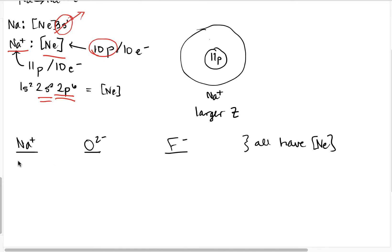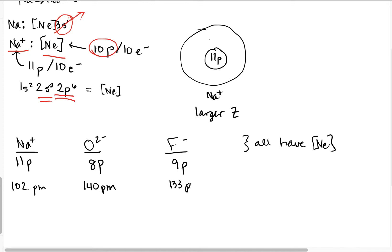All three of these ions have a neon noble gas electron configuration, so now we are comparing apples to apples. Sodium ion has 11 protons, fluoride has 9 protons, and oxide has 8 protons. The ionic radii are 102 picometers for sodium ion, 140 picometers for oxide, and 133 picometers for fluoride.